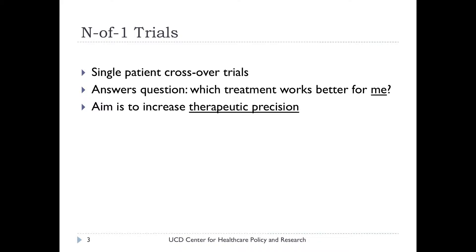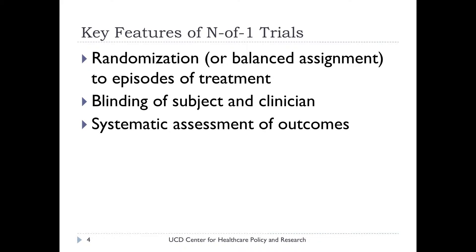The full-blown version of n-of-one trials involves three important components. The first is randomization or balance, where patients are switched back and forth between treatments. It might not be enough to just go on treatment A for a while and then switch to treatment B. For more reliability, you might want a pattern like A-B, A-B — or a balanced design such as A, then B, then B again, then ending with A. So balance or randomization is really important.